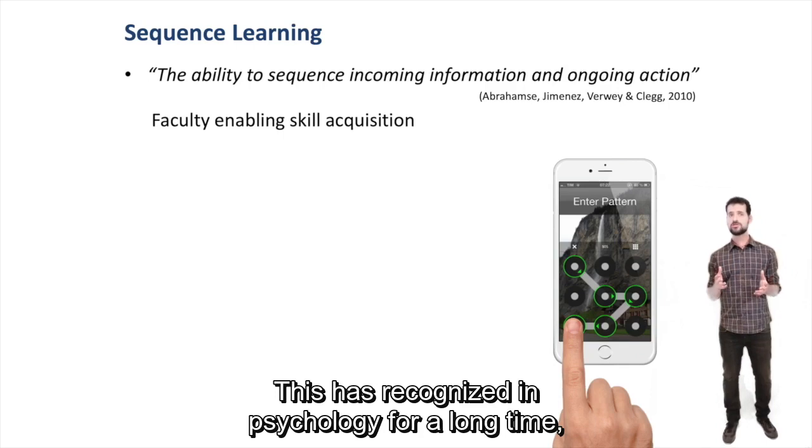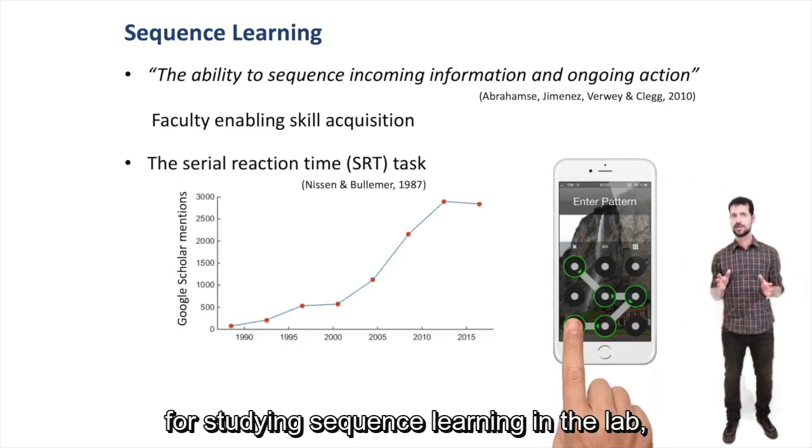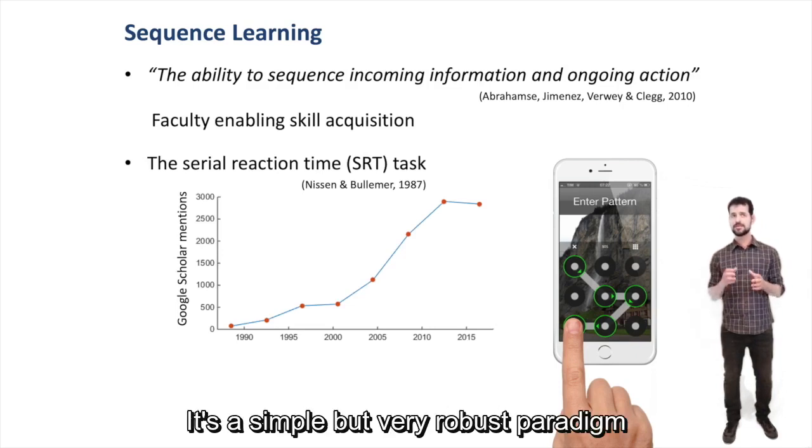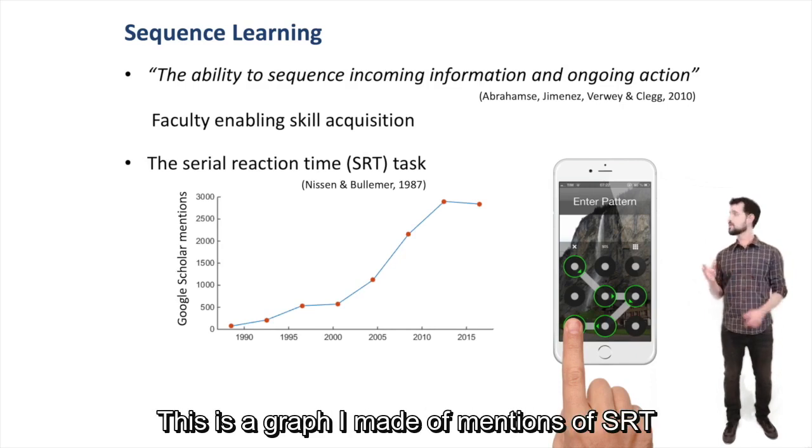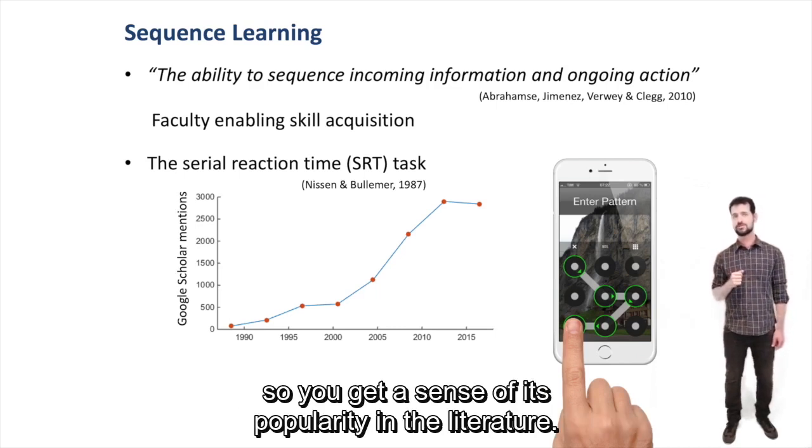This has been recognized in psychology for a long time, but the method that has become the hallmark for studying sequence learning in the lab is the serial reaction time task, SRT. It's a simple and very robust paradigm introduced by Edison and Burlemore in the late 80s. This is a graph I made of mentions of SRT in Google Scholar over the years, so you get a sense of its popularity in the literature.